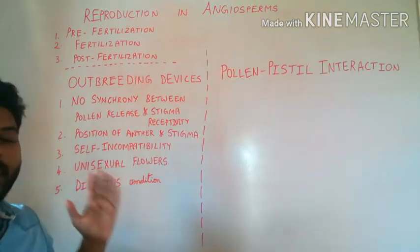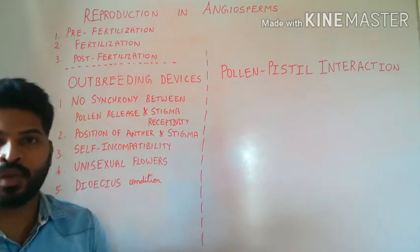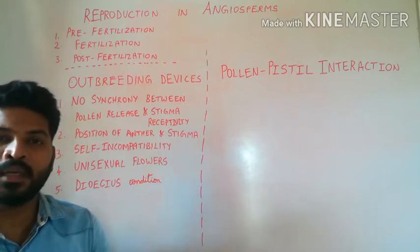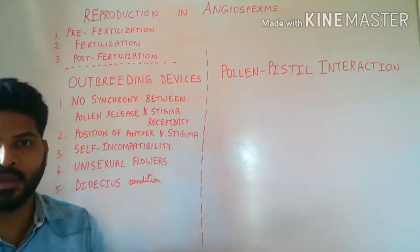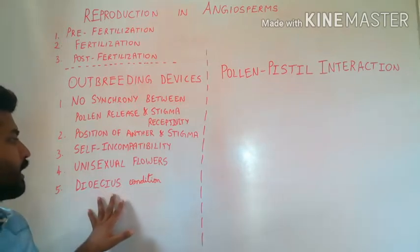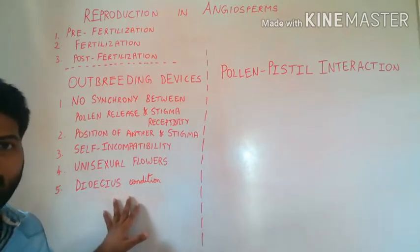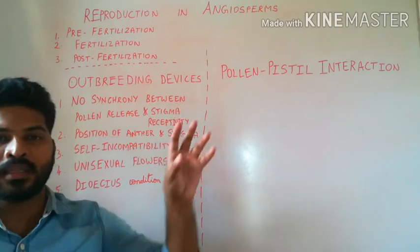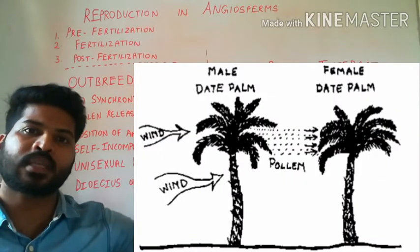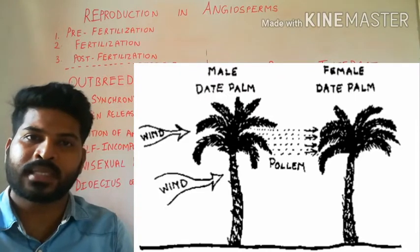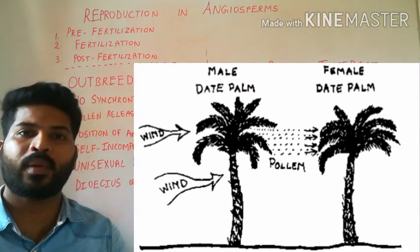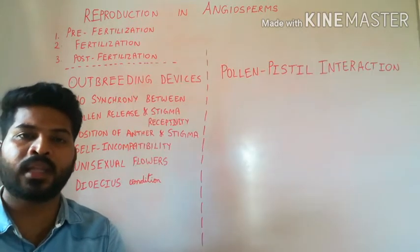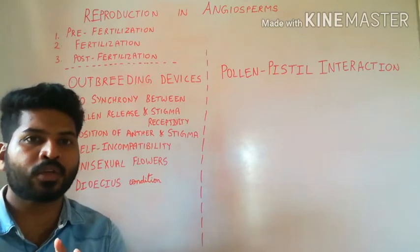Another mechanism is the production of unisexual flowers. Unisexual flowers prevent autogamy but cannot prevent geitonogamy. Because of this, certain plants of the flowering plant family have what is called a dioecious condition, meaning the female flower is produced on a separate plant and the male flower is present on a separate plant, therefore preventing both autogamy as well as geitonogamy and encouraging xenogamy, that is complete cross-pollination.